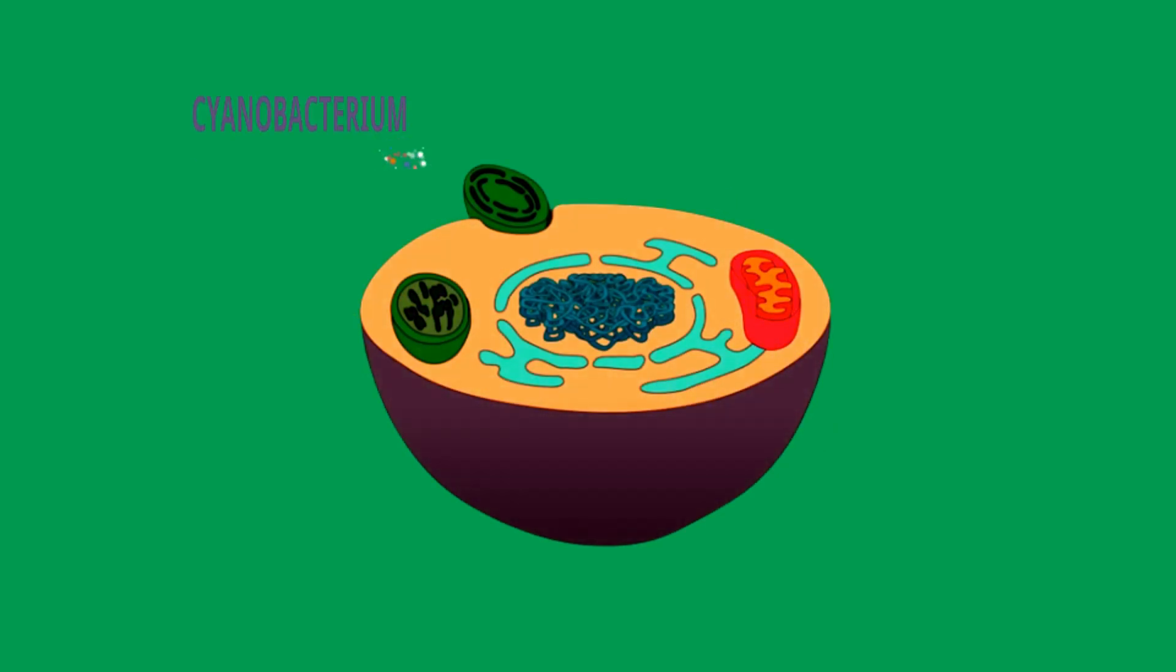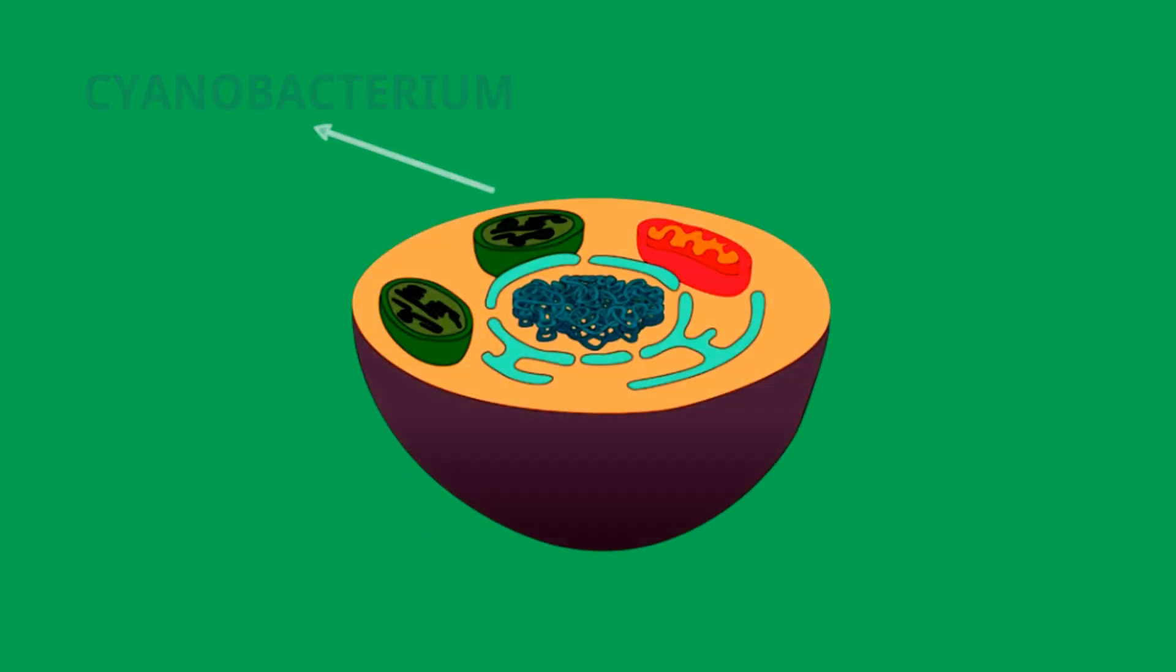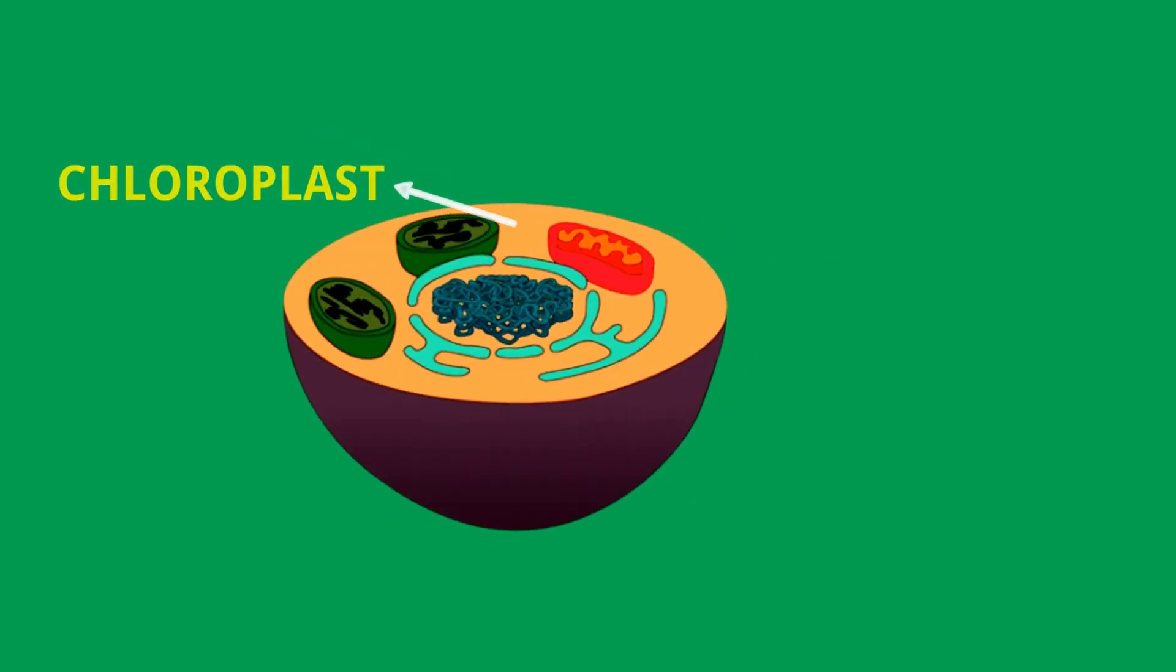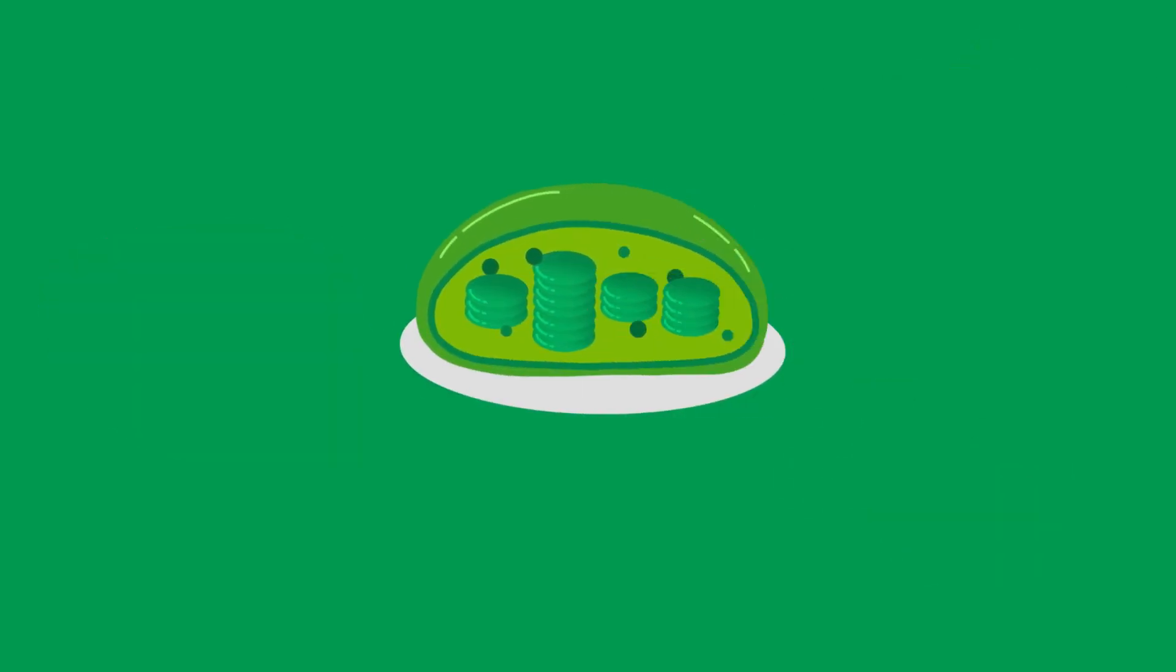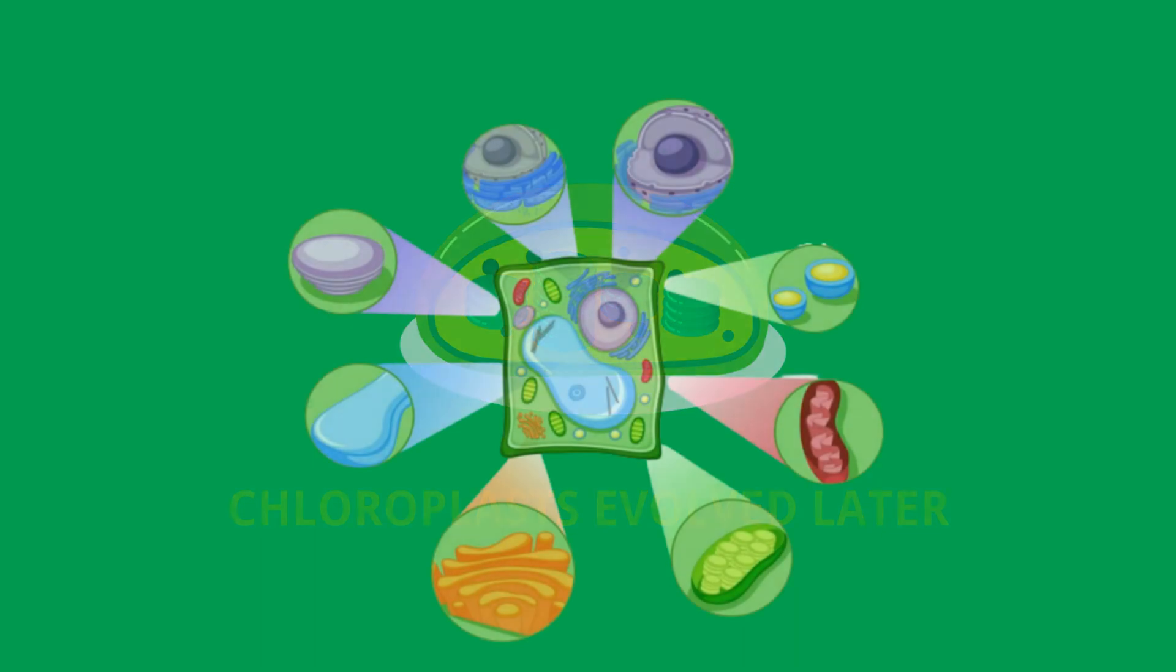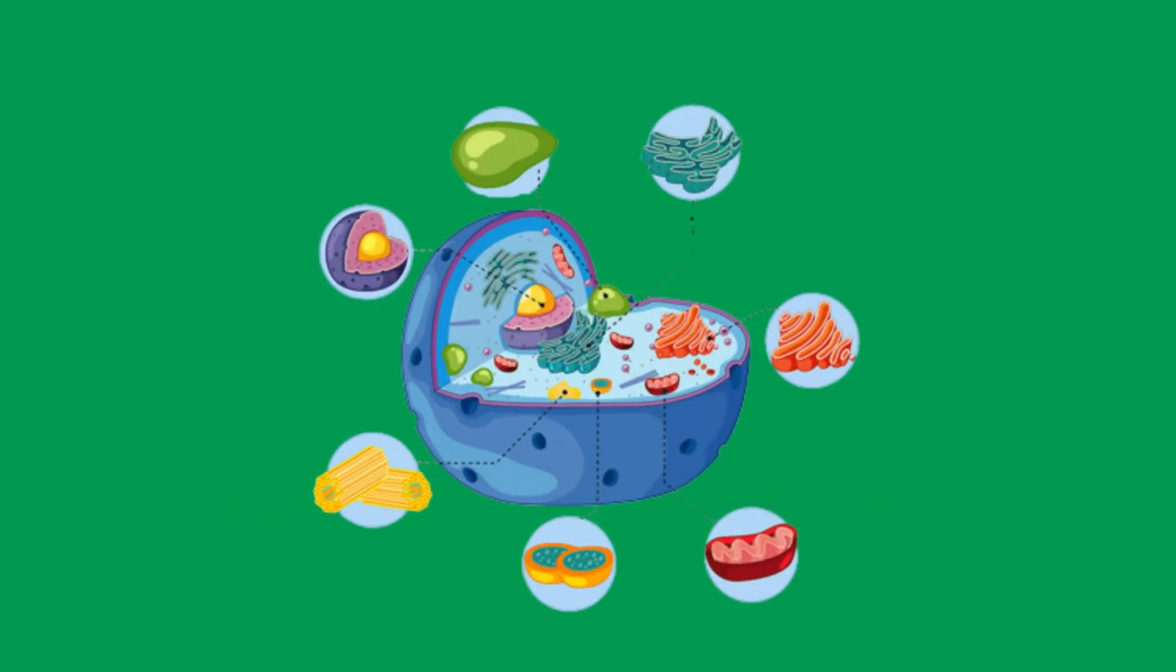Some time later, the same process occurred with a cyanobacterium, which becomes the chloroplast. This eukaryote was the ancestor of plants and algae. We know that chloroplasts evolved later because plant cells have both mitochondria and chloroplasts, while animal cells have only mitochondria.